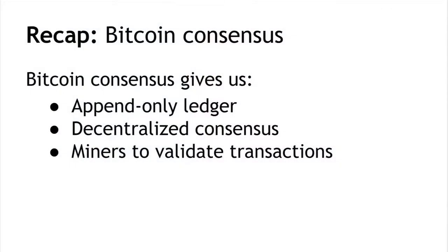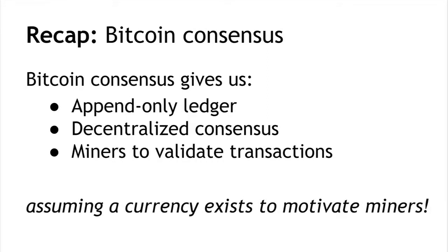To recap where we left off last time, the Bitcoin consensus mechanism gives us an append-only ledger — a data structure that we can only write to, and once data is written it's there forever. There's a decentralized protocol for establishing consensus about the value of that ledger, and the miners who perform that protocol are validating transactions, making sure transactions are well-formed, that there aren't double spends, and that this thing can function as a currency. In this lecture we'll look at the details of how we actually build that currency to make the miners make this whole process happen.